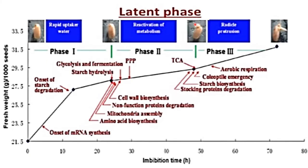This sugar enters inside the epicotyl, which leads to the growth and germination of the seed. The latent phase is further divided into phases 1, 2, and 3. In phase 1, rapid uptake of water takes place and the onset of mRNA synthesis starts. Then onset of starch degradation takes place, then glycolysis and fermentation of starch hydrolysis, which leads to cell wall biosynthesis, non-functional protein degradation, mitochondrial assembly, and amino acid biosynthesis.